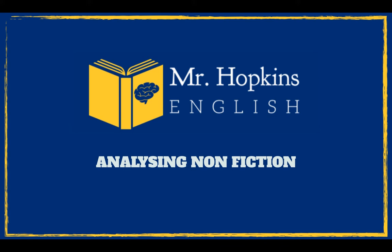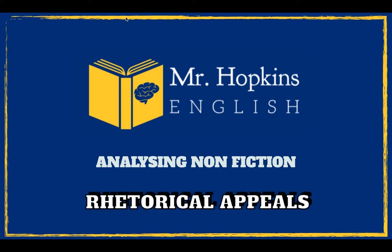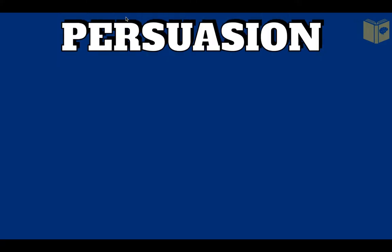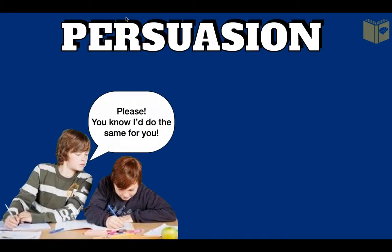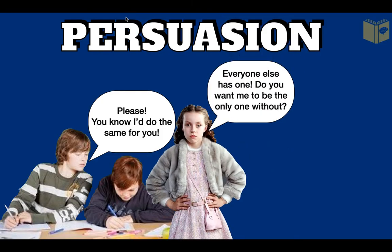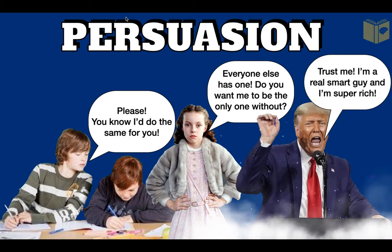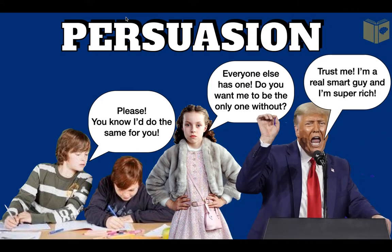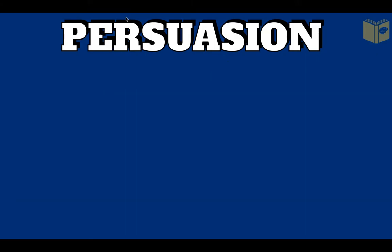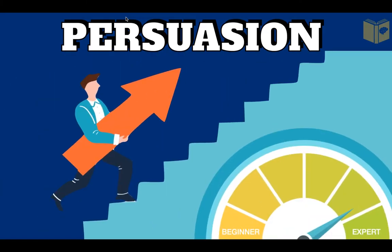In this non-fiction analysis video, I'll go over rhetorical appeals. Persuasion happens around us all of the time — whether it's a student trying to persuade a friend to copy work, a child trying to persuade their parents to buy them a new phone, or politicians trying to persuade us to follow them. Persuasion is always happening. However, persuasion is a skill, which means it can be taught, practiced, and improved.